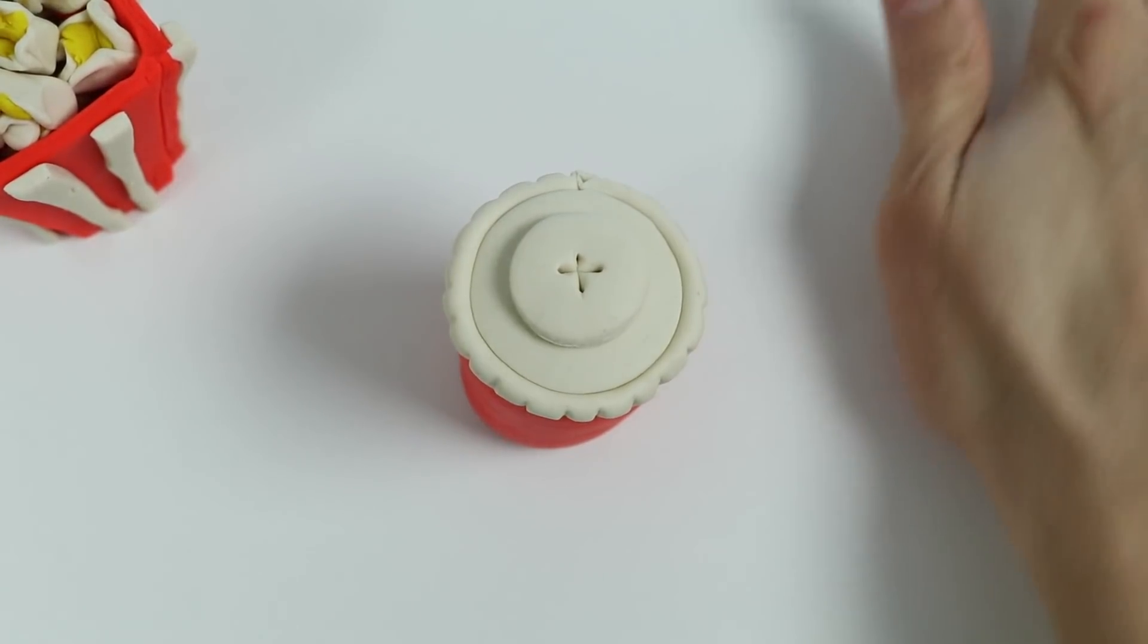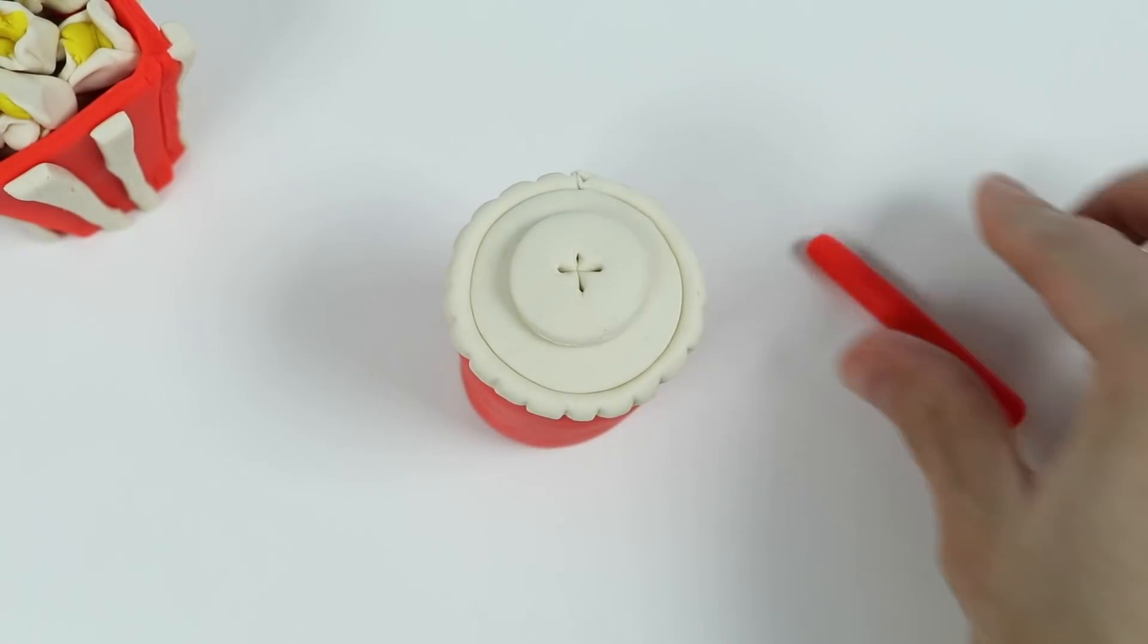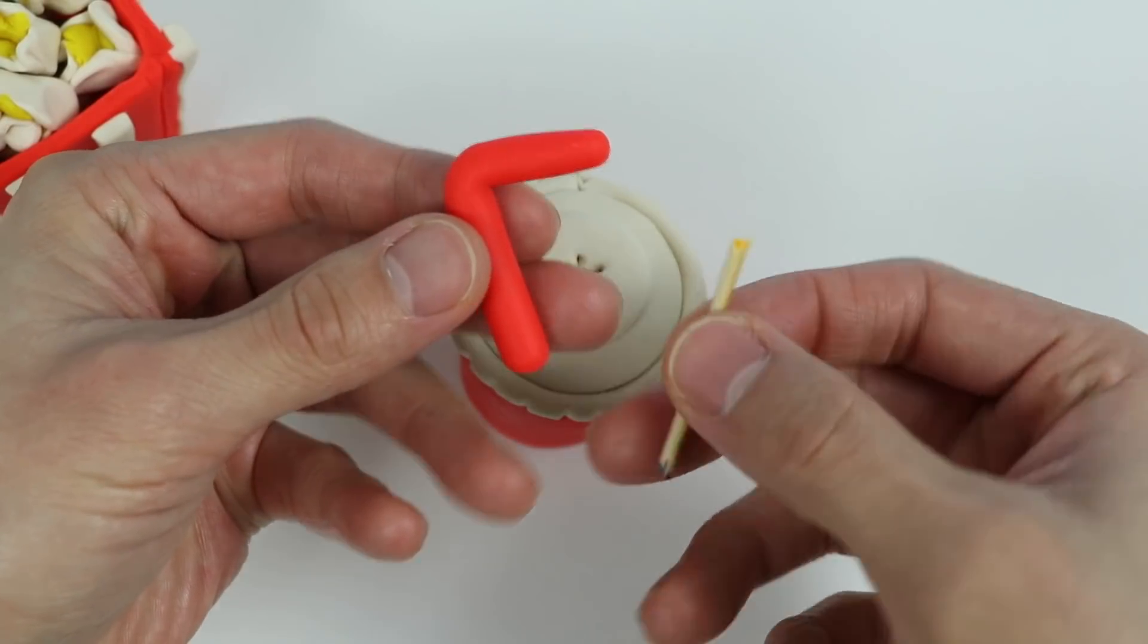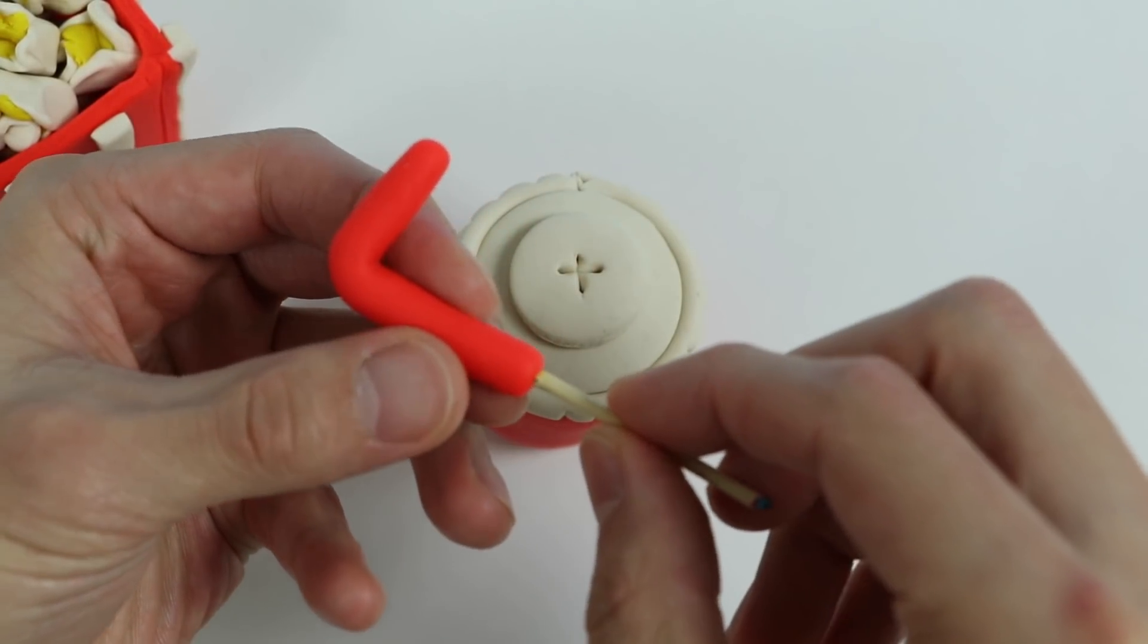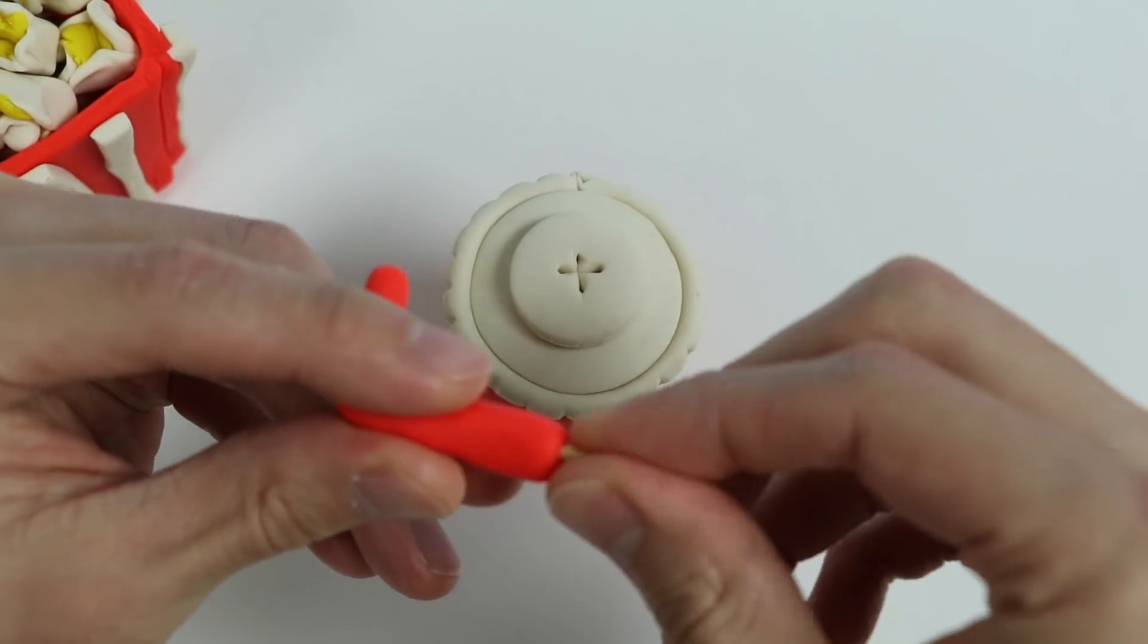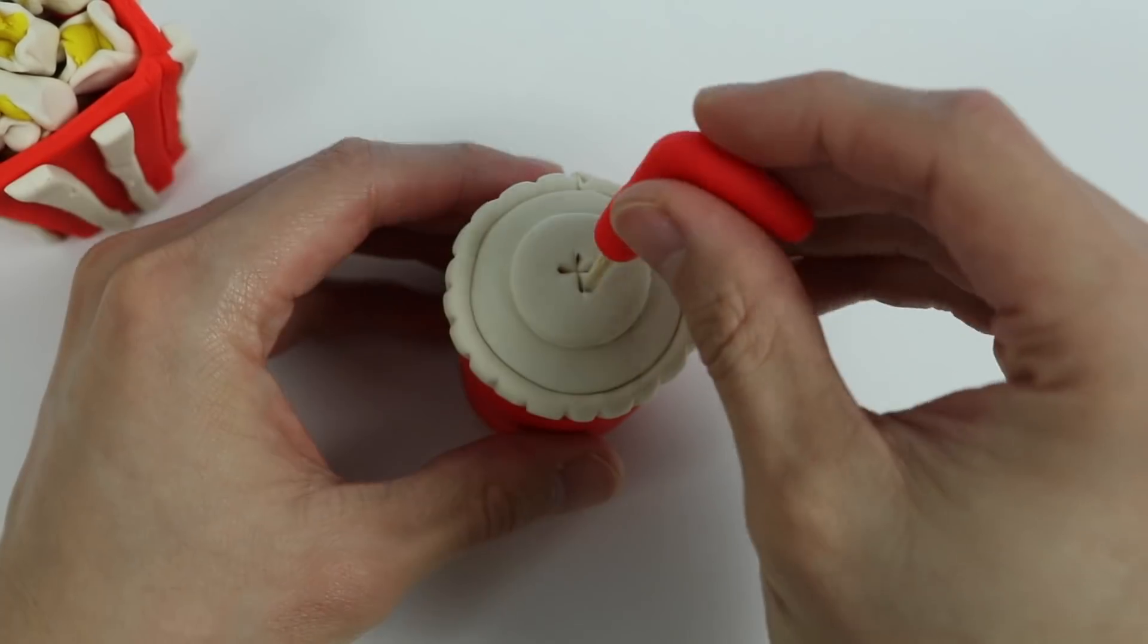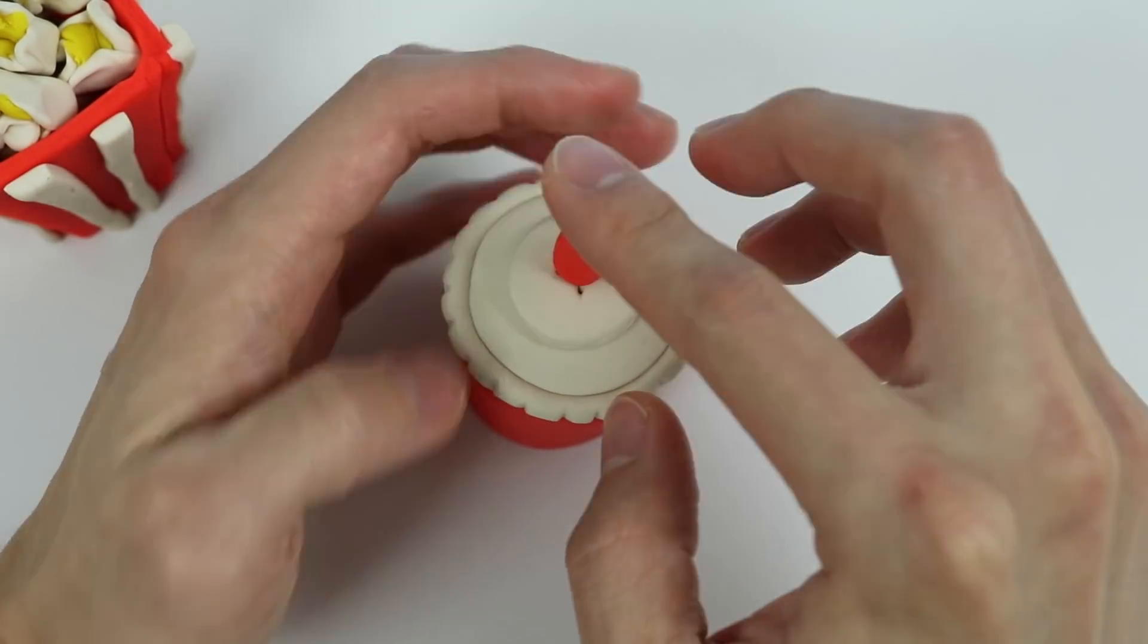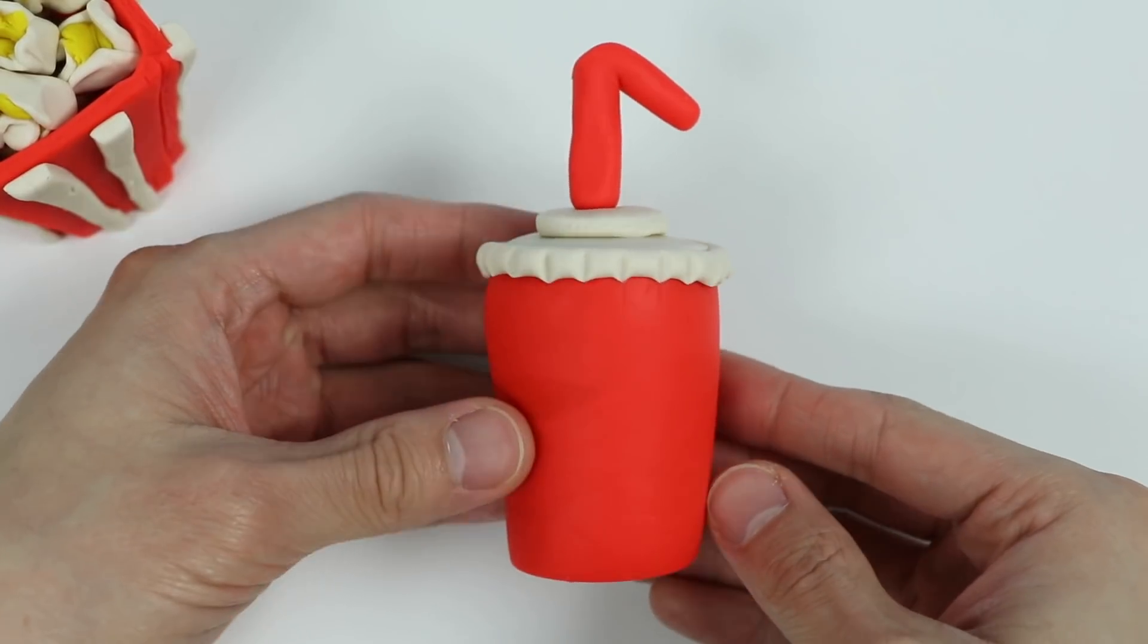Now let's use this red Play-Doh to make a straw. Let's bend the straw. Now let's insert a toothpick and then poke the straw into the lid. Awesome! Here's our Play-Doh soda.